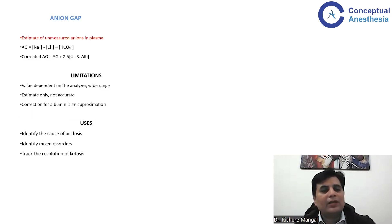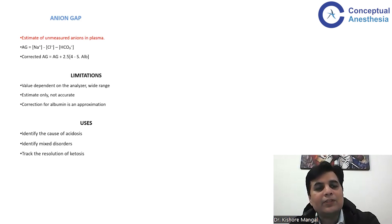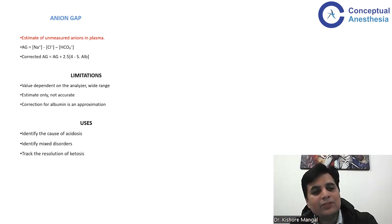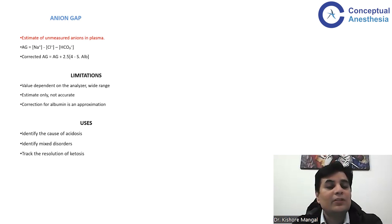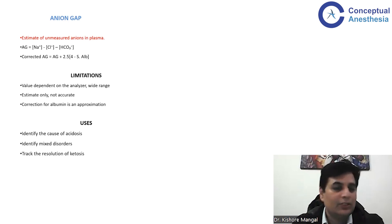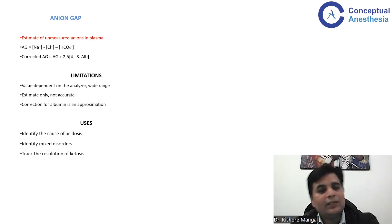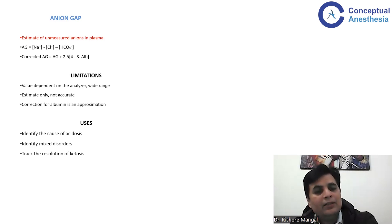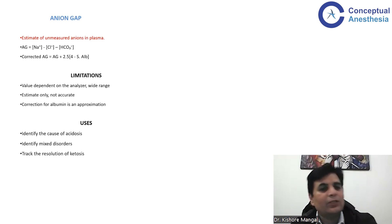What is the anion gap and why are we stressing on it? The anion gap is an estimate of unmeasured ions in the plasma. We measure some anions and some cations. The major cation is sodium; we also measure calcium, magnesium, and potassium, but their values are not very high and do not vary much. That is why in the anion gap we only take sodium as the major cation, and the major measurable anions are chloride and bicarbonate. The difference between the two becomes the anion gap.